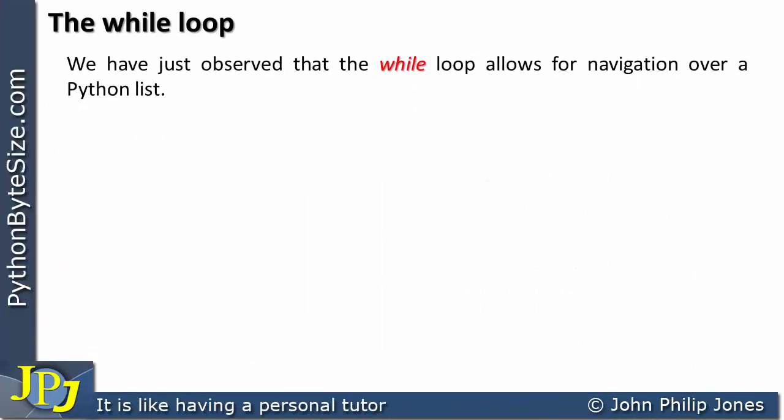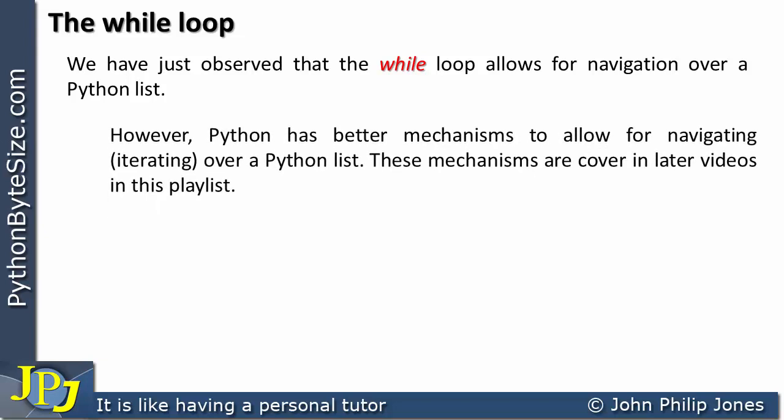We have just observed that the while loop allows for navigation over a Python list. This requires a conditional test — a relational operator — and a variable that is incremented every time we go through the loop. It has been a useful exercise to iterate across a Python list using the while loop, as it emphasizes the index nature of a Python list. Python does have better mechanisms to allow for navigating, that is iterating over a Python list, and these mechanisms are covered later in this playlist.